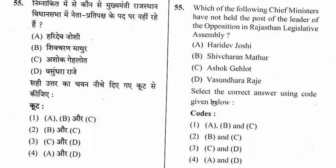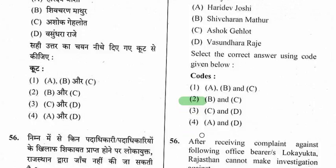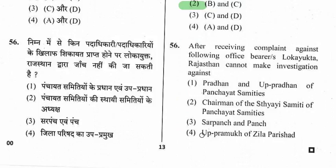Question 56: After receiving a complaint against the following office bearers, Lokayukta Rajasthan cannot make an investigation against whom? Options include Pradhan and Upa-Pradhan of Panchayat Samiti, Chairman of the Standing Committee, Sarpanch and Panch, and Upa Pramukh of Zila Parishad. The right option is Sarpanch and Panch.